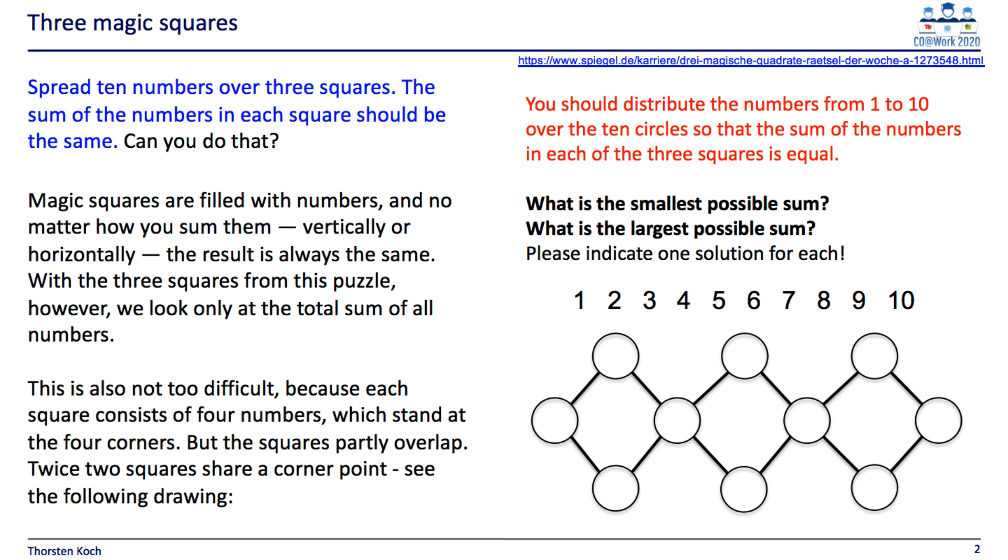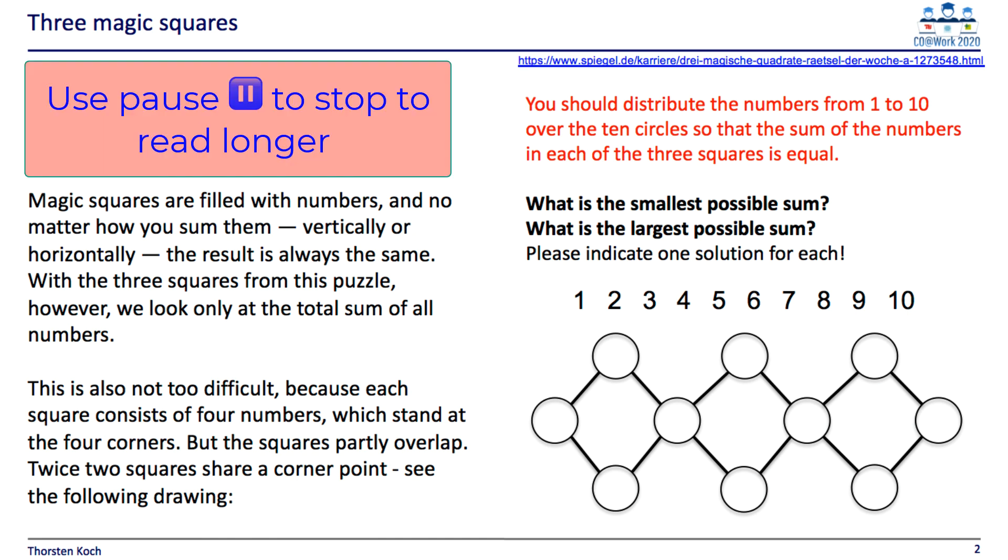Here is a Sunday teaser out of the newspaper. You should put 10 numbers into the corners of 3 squares. The squares are connected by one corner as you can see in the picture. Just distribute the numbers 1 to 10 into the circles such that the sum of each square is the same. Is there a solution? Is there more than one solution? If so, what is the smallest sum? And what would be the largest sum?